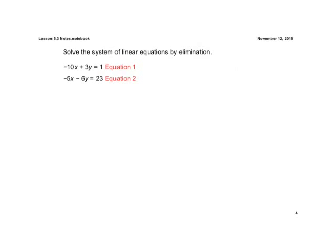Again, we need opposite signs. Let's look at equation 1 here and look at the y variables. If we multiplied that whole first equation by 2 and distribute it, we would get 2 times 3y, which is going to be a positive 6y. If we distribute to everything, we're going to be left with negative 20x plus positive 6y equals positive 2. This is now our equation 1.